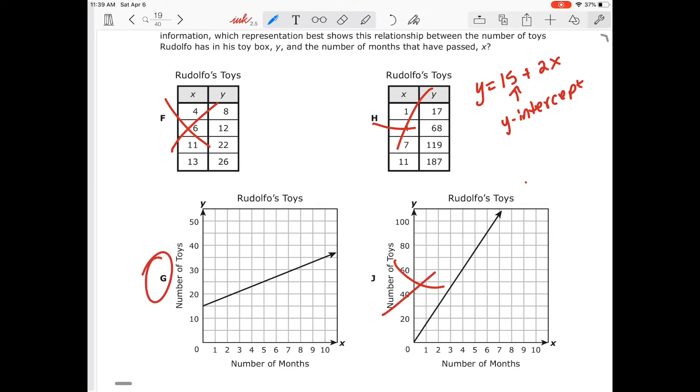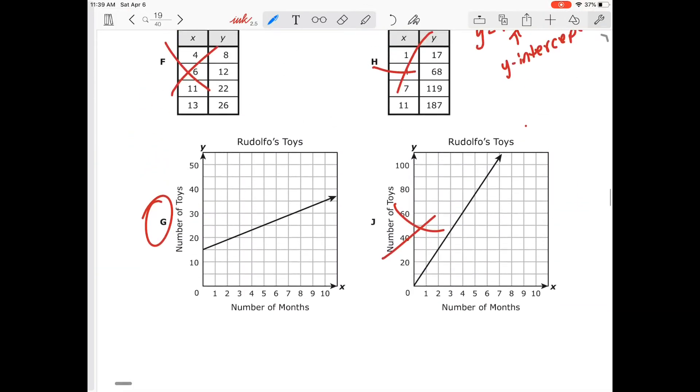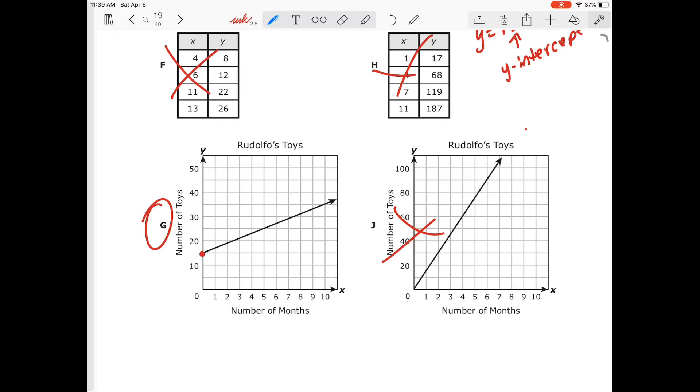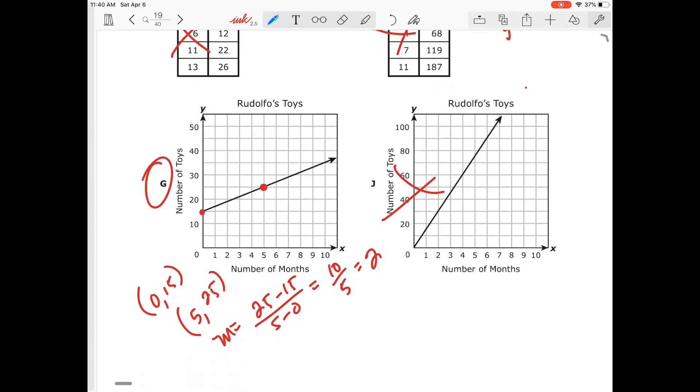But let's check. So I have this point here, and that is (0,15). Then I have this other point there, which is going to give me, that's going to be (5,25). 25 minus 15 over 5 minus 0. 25 minus 15 will give me 10. 10 divided by 5 is equal to 2. So that does give my slope that I'm looking for, because that's what we're looking at here is our slope. That does give me the slope that I have written up there for my equation, and the y-intercept. So it has to be G.